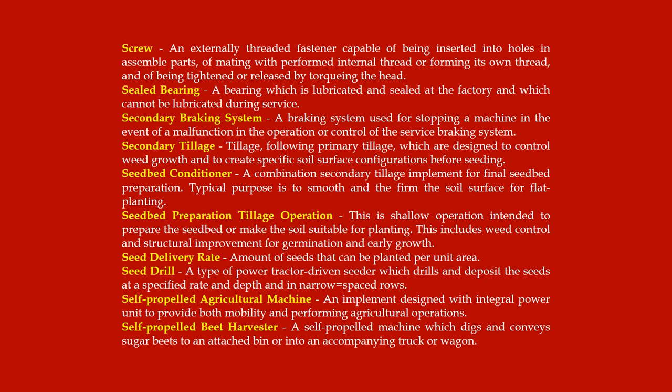Secondary tillage: tillage following primary tillage, designed to control weed growth and to create specific soil surface configurations before seeding. Seedbed conditioner: a combination secondary tillage implement for final seedbed preparation; typical purpose is to smooth and firm the soil surface for flat planting.